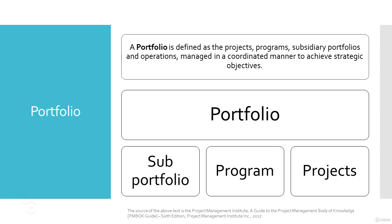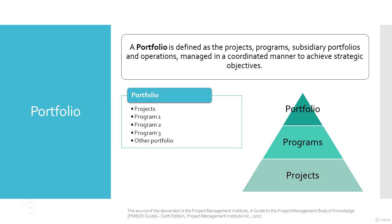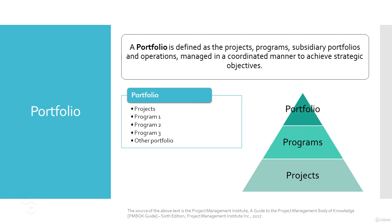If we put this all together, you will notice that portfolio is at the highest level. If we think of projects, programs, and portfolios together in a triangle, then portfolio will be at the top of the hierarchy. We have projects at the bottom — project 1, project 2, etc. — and then programs such as program 1 and program 2, and then projects and programs together will form the portfolio which is at the top.